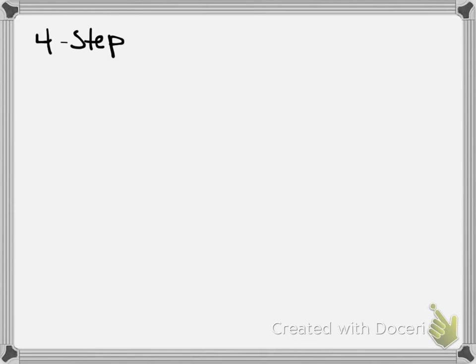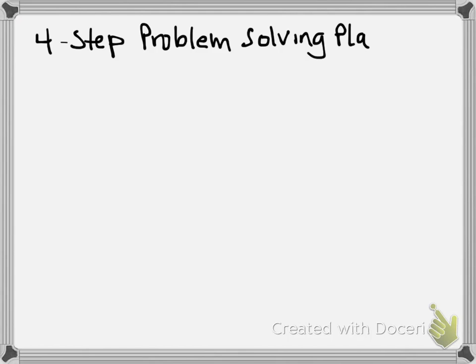So, today we're going to talk about — your note title would be: four-step problem solving plan. I'm getting myself confused about how many notes we've taken, so I'm going to make a big table of contents and put it up on the board to make sure we all have the same topics. Your page numbers are going to be different, but your date should be the same as what I write up there. Four-step problem solving plan — today is the 23rd. Remember, all of that goes in your table of contents.